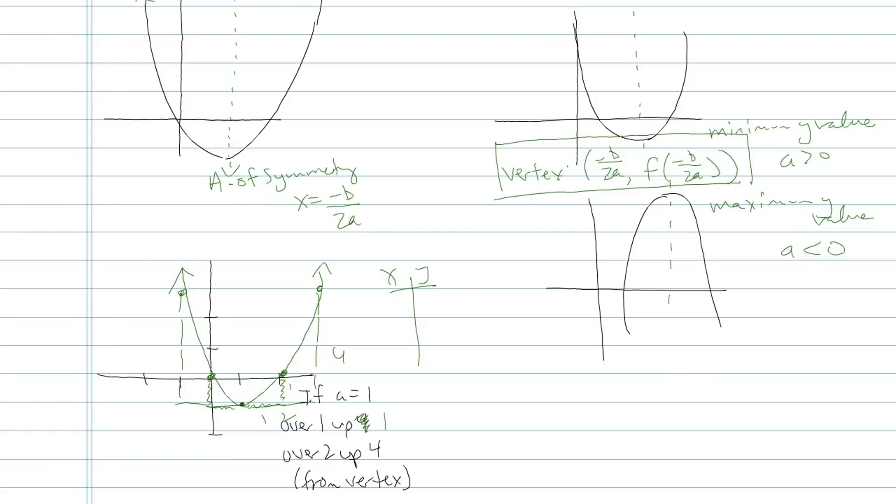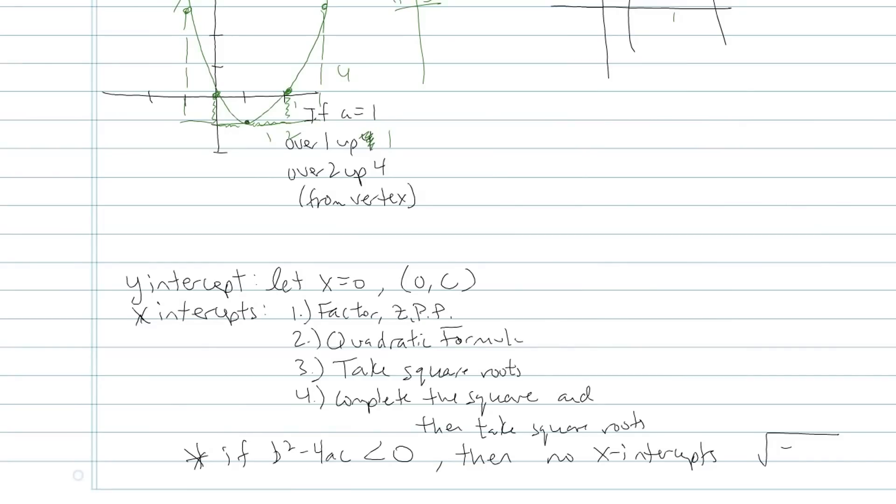Last we're going to talk about is the x and y intercepts. Always for the y intercept, always, always, always, no matter what kind of function, you're going to let your x number be equal to 0. So in this type of problem, a quadratic equation, if my x number is 0, my a and my b term are going to go to 0. All that's going to be left is the c. So my y intercept coordinates will always be 0, c.